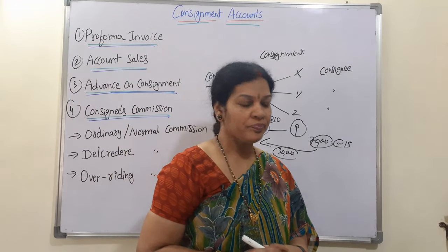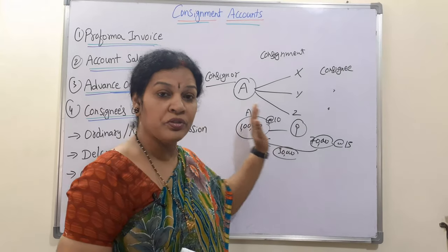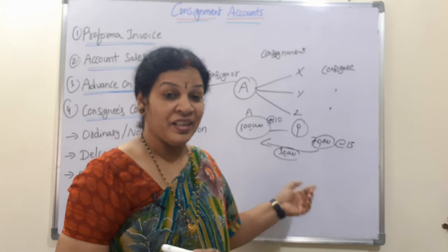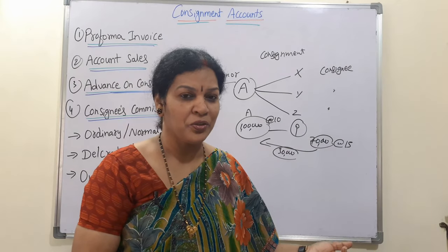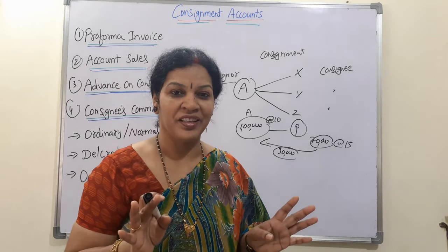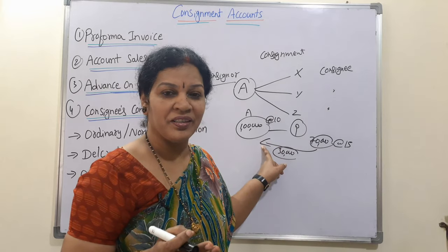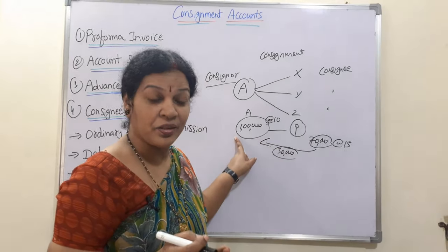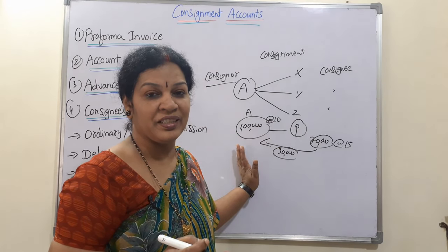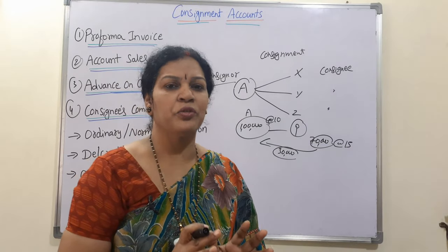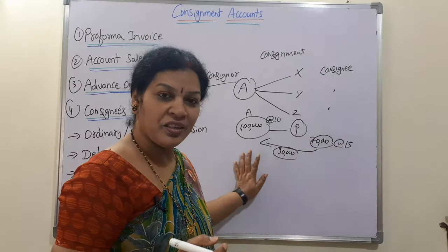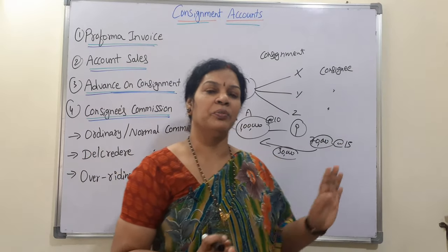One more important thing: when the consignor sends goods to the consignee, some advance is required. If simply transferring 1 lakh worth of goods and the consignee disappears tomorrow, the risk falls on the consignor alone. That is why the consignor may ask for some advance from the consignee as assurance, so that he can rely on the consignee. All consignment transactions are based on this framework.